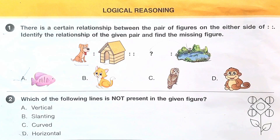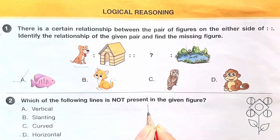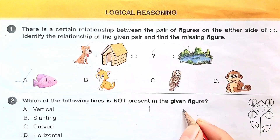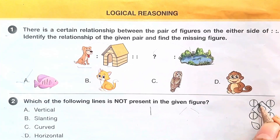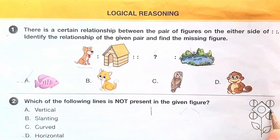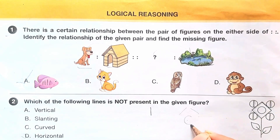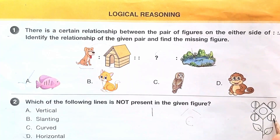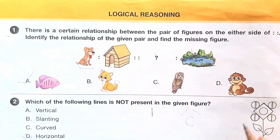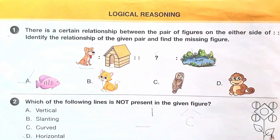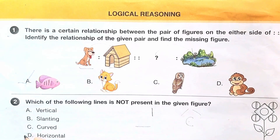Coming to question 2: which of the following lines is not present in the given figure? Vertical lines are like this, and there are many vertical lines here. Slanting lines are present as well. Curved lines are also present. Horizontal lines are like this — there are no horizontal lines. So the answer is option B.